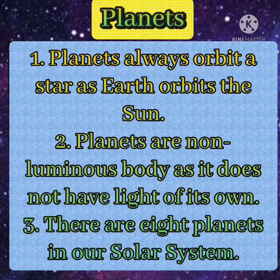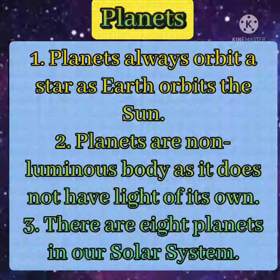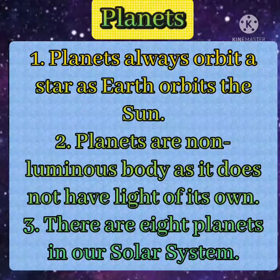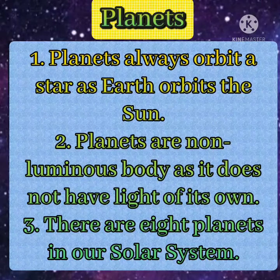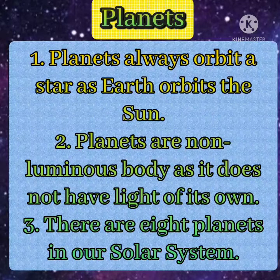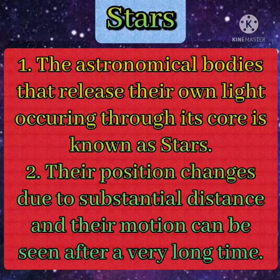Let's recapitulate the key differences between stars and planets. First, stars are astronomical bodies that release their own light produced due to thermonuclear fusion occurring at their core, whereas planets are celestial objects that move in a fixed path called an orbit around a star. Second, stars have their own light and are luminous bodies, whereas planets do not have their own light — they reflect the sunlight that falls on them.